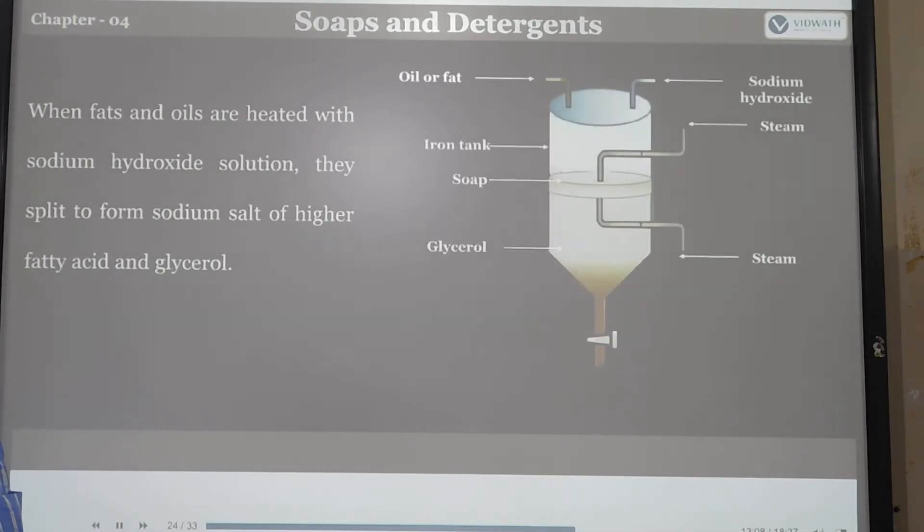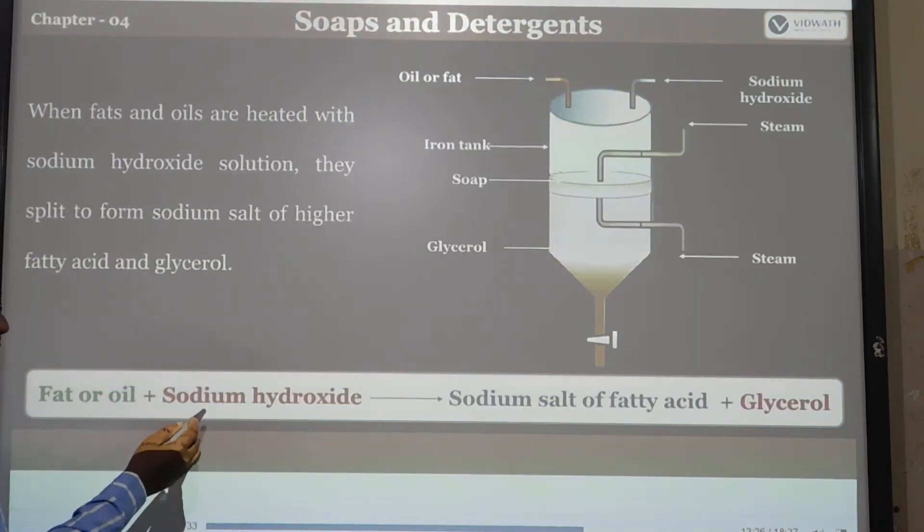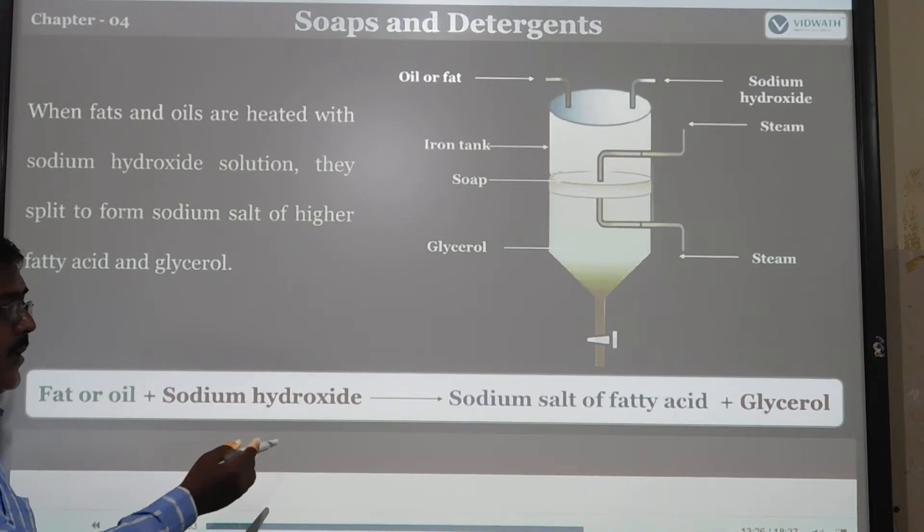First, you take fats in an iron tank and add sodium hydroxide or potassium hydroxide solution. The fats are heated with the sodium hydroxide solution and split up into sodium salt of the higher fatty acid and glycerol.